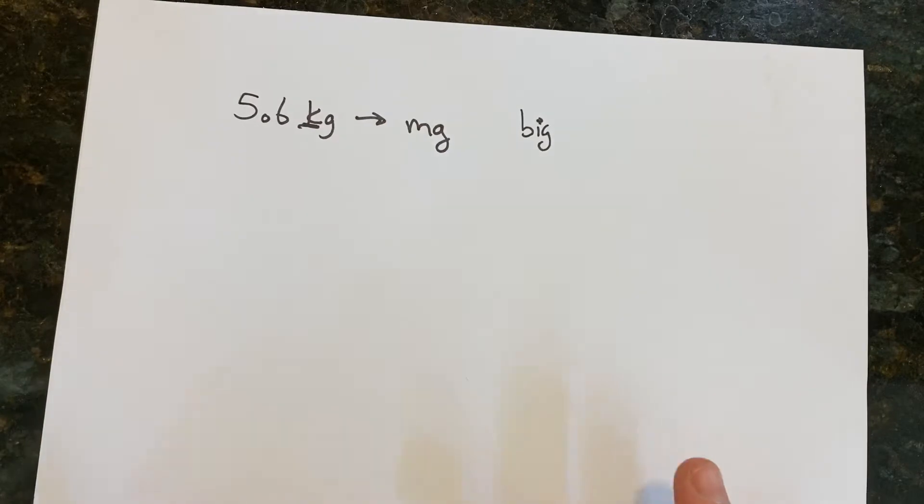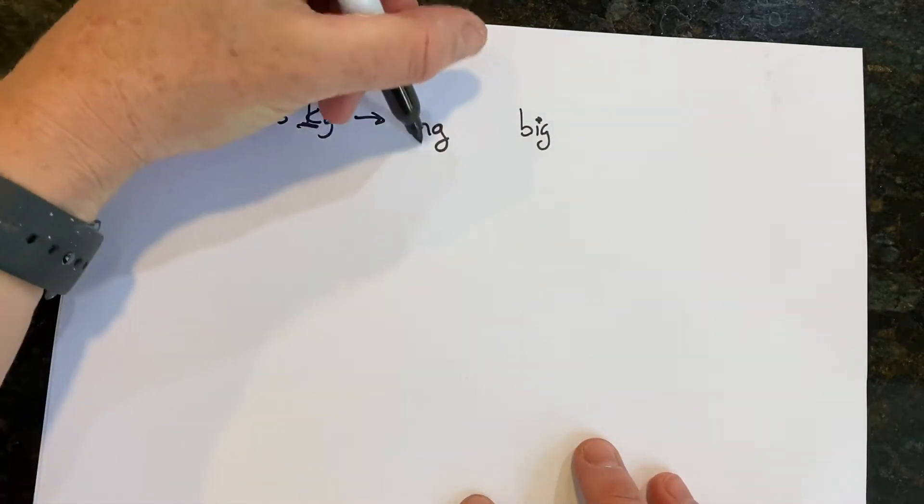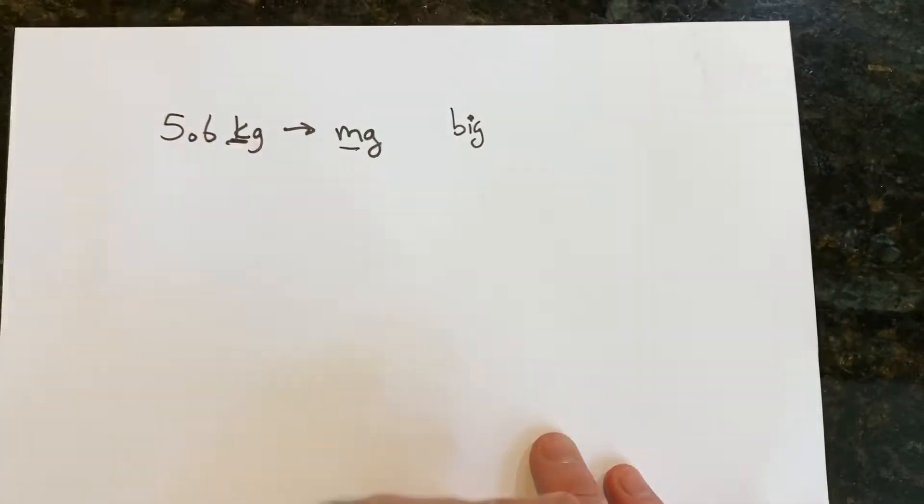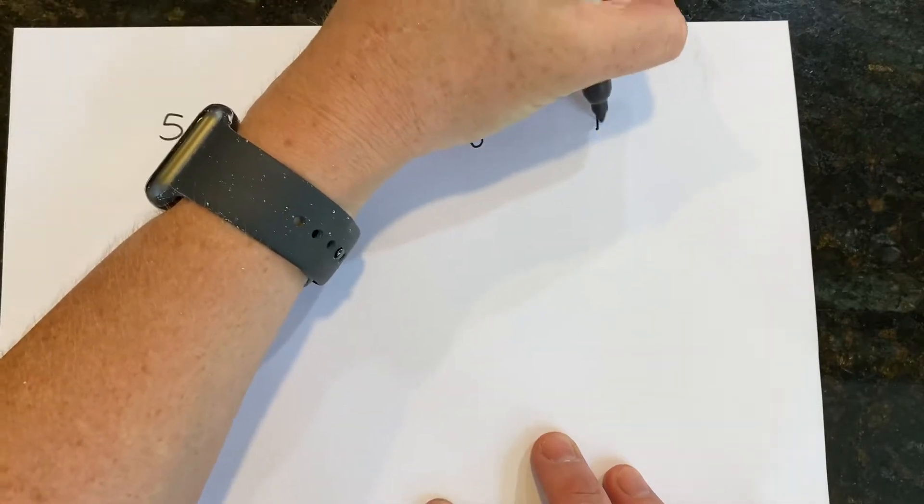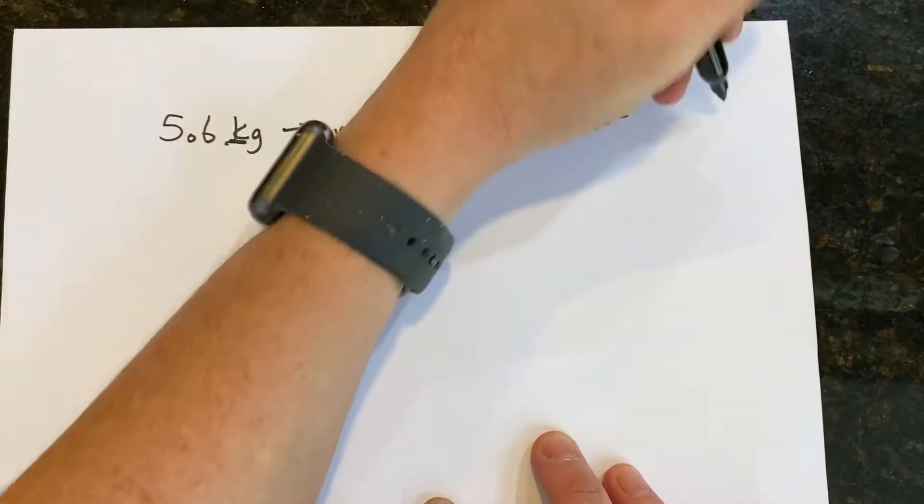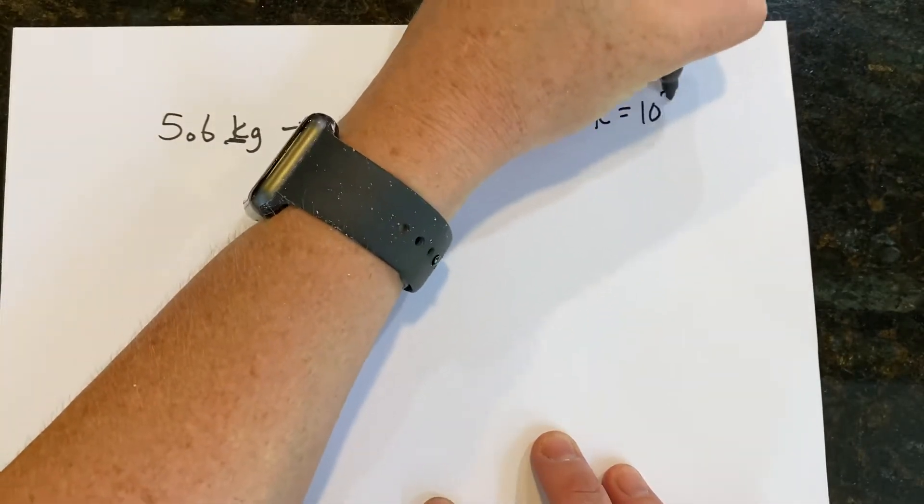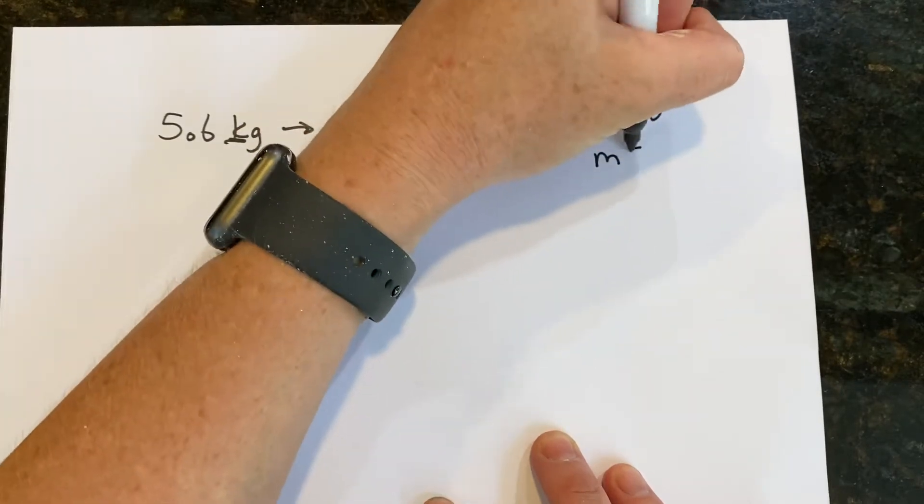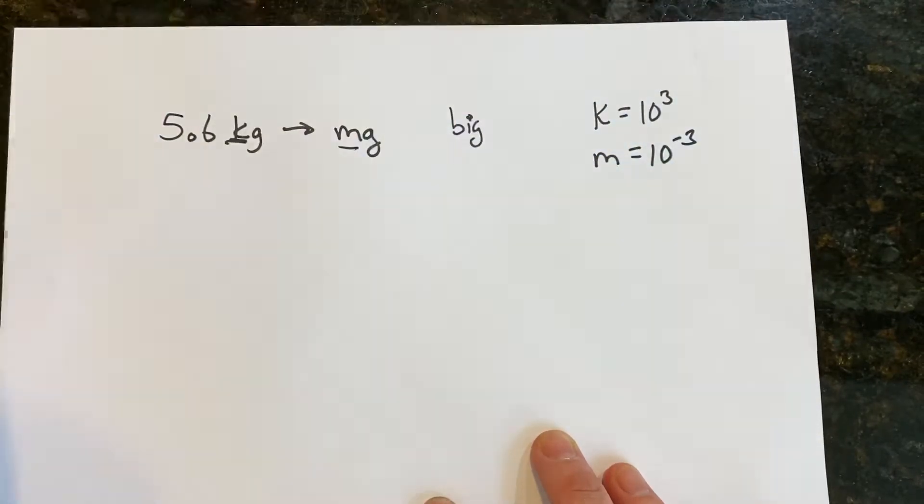All right, the next thing that we have to remember is what these little prefixes mean. So we can go through and do all of them but you should memorize them. Kilo is 10 to the third and milli is 10 to the negative third and that's what those prefixes mean.